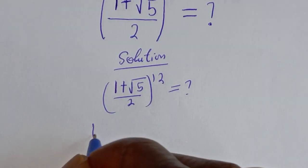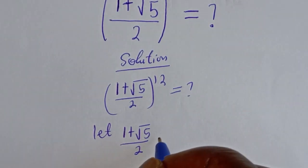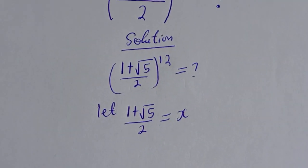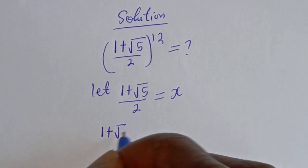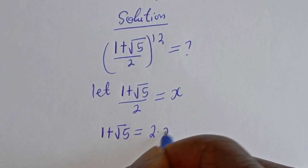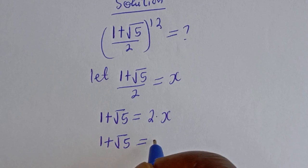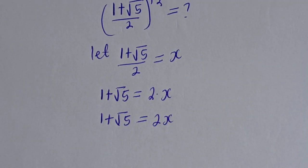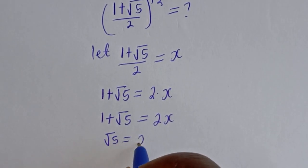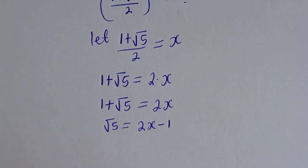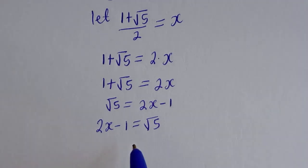Let x equal (1 plus square root of 5) over 2. Then 1 plus square root of 5 equals 2x. From here, square root of 5 equals 2x minus 1. Let's rearrange: 2x minus 1 is equal to square root of 5. Now let's square both sides of this equation.